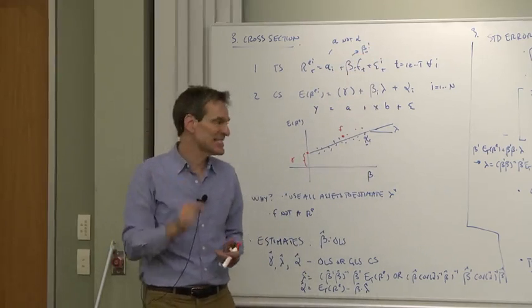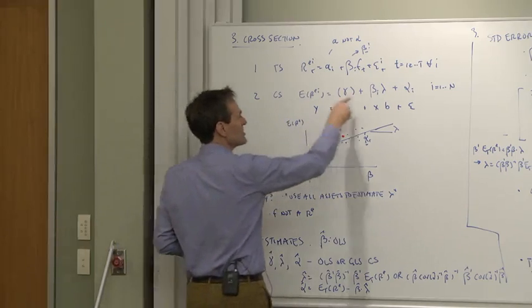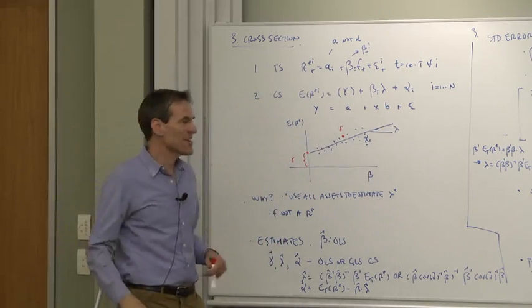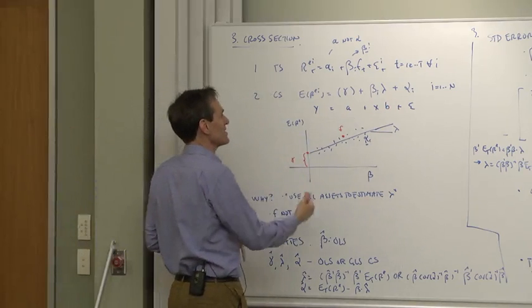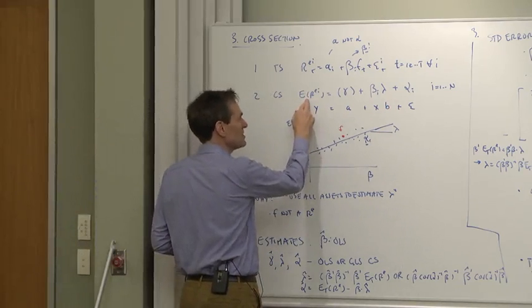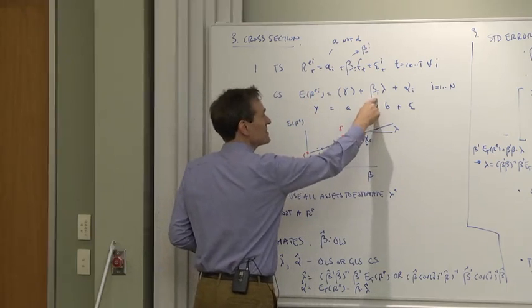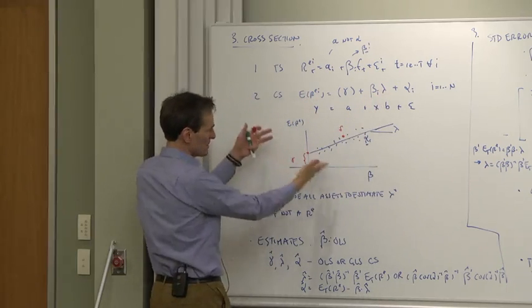Then in a second step, you run the cross-section that we've been looking at all along. You don't just imagine it, you actually run that as a separate regression. Run expected returns on the betas to get the factor risk premium. This is our graph.